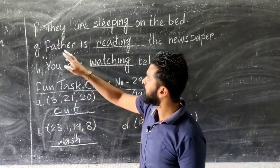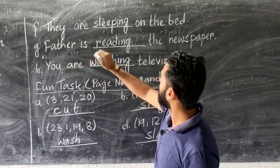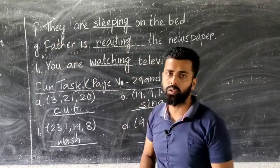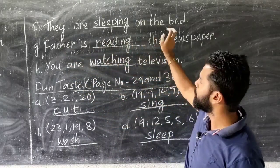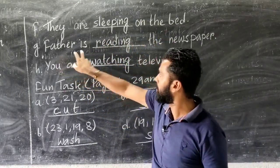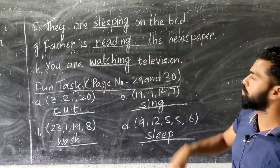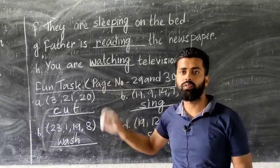Number F is they are dash on the bed. Here also you have to fill the verb. They are sleeping on the bed. Next is father is dash the newspaper. You have to fill the verb from the box. Father is reading the newspaper.